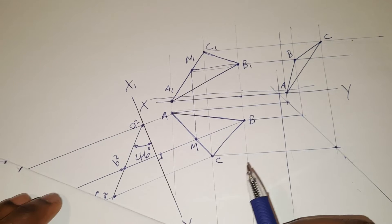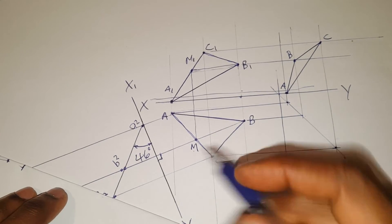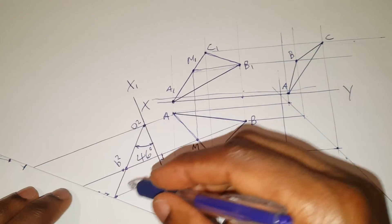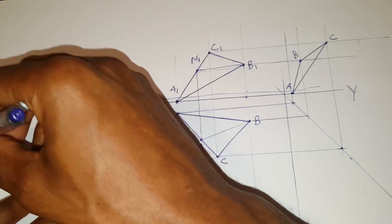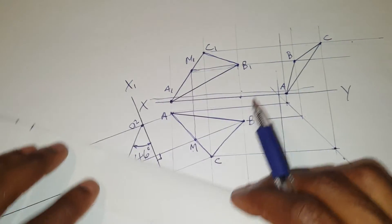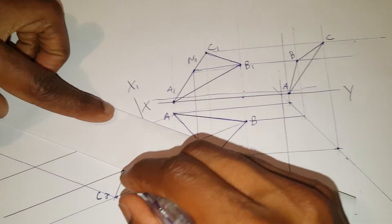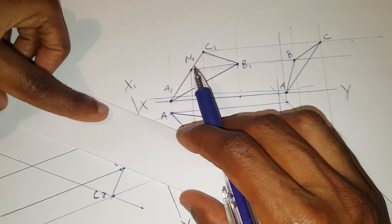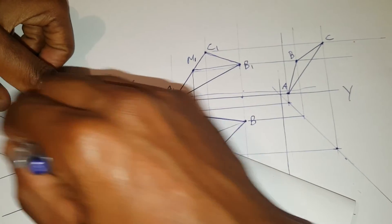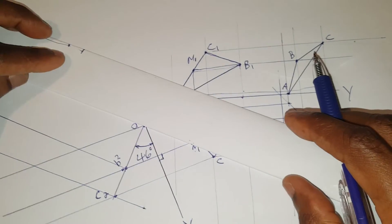My next step now is to draw a perpendicular line to these. Draw lines perpendicular through these points. Perpendicular through there, perpendicular through this point, and perpendicular here.